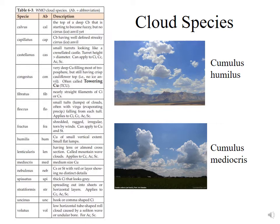Cumulus mediocris is down below, and if you look on the left, you'll see that mediocris means medium in size. So these clouds do have some vertical extent to them.